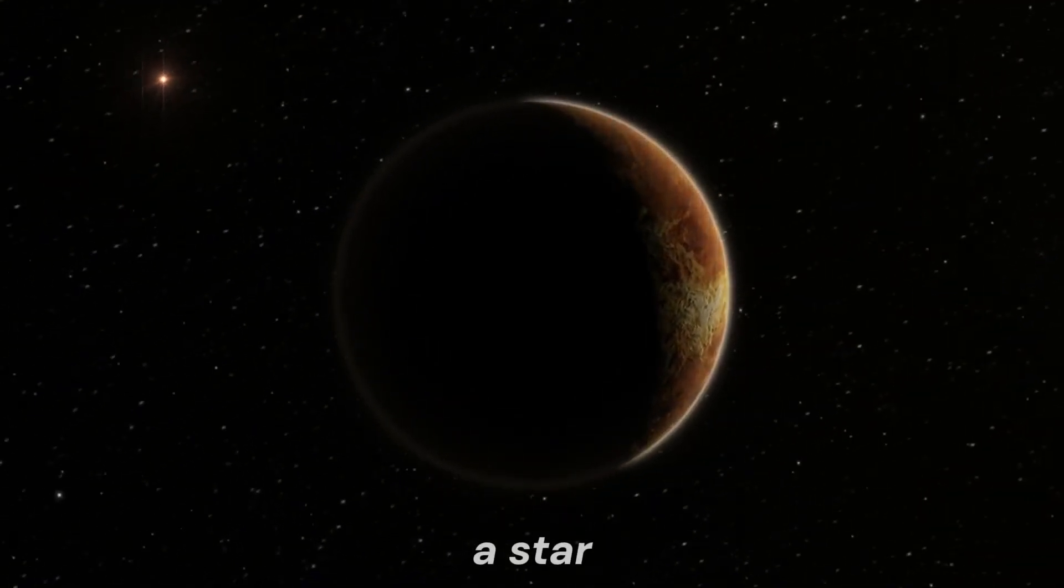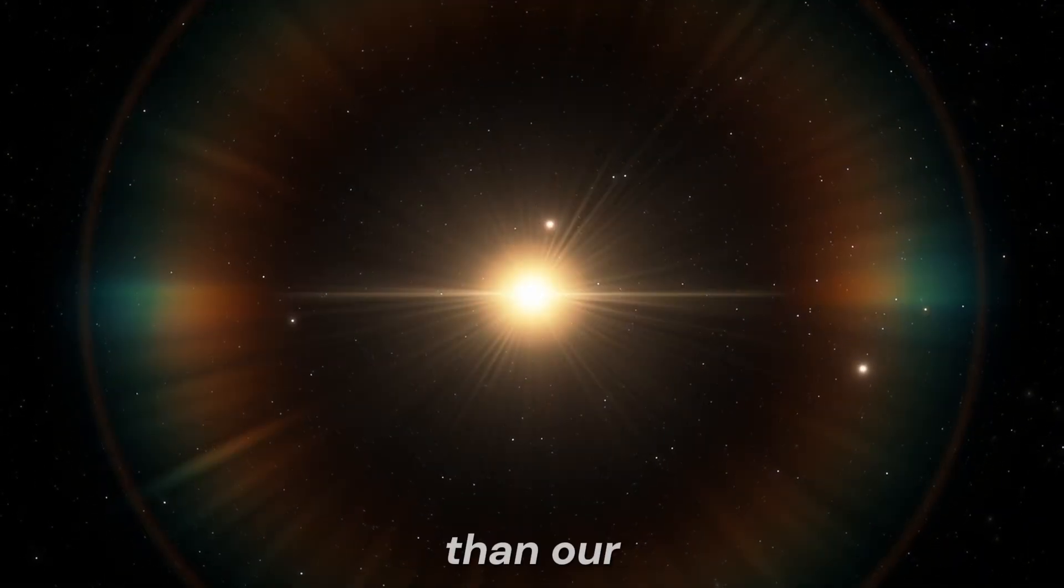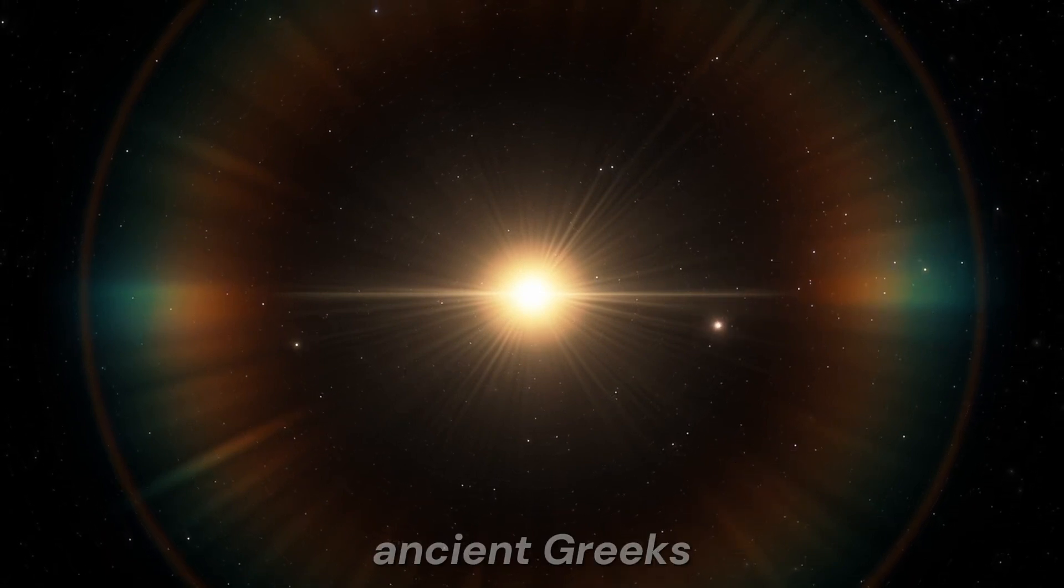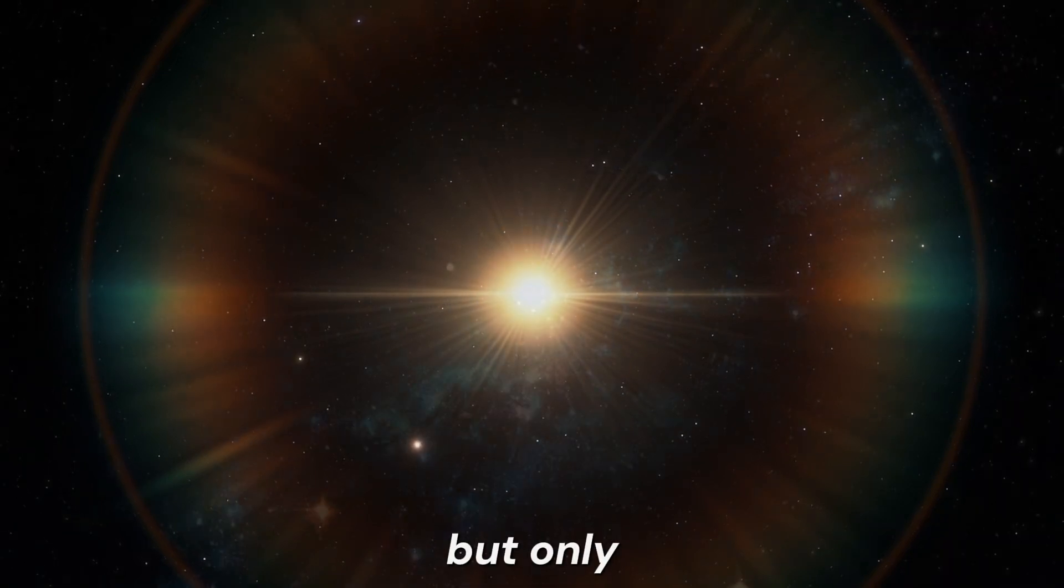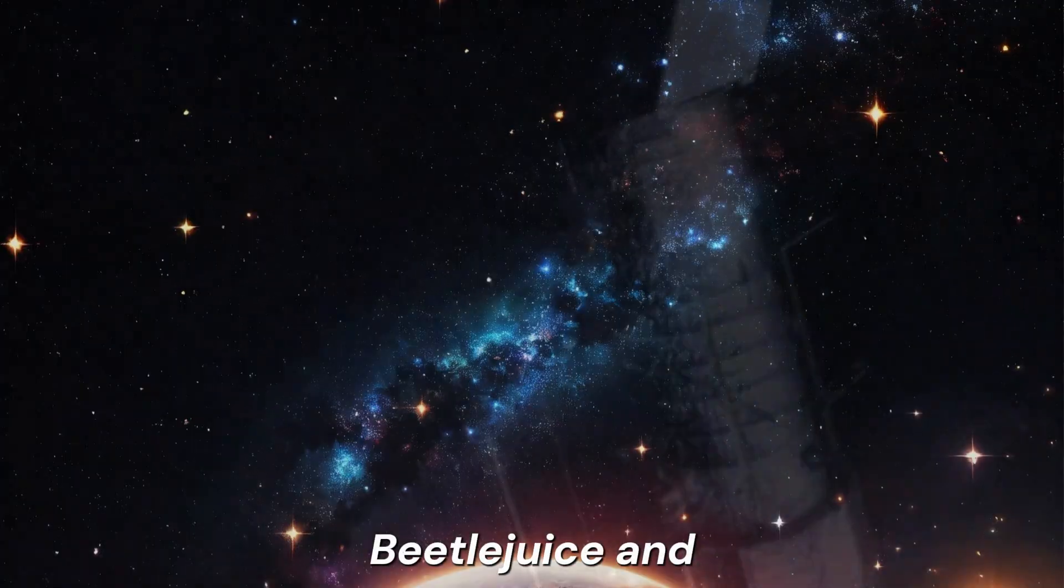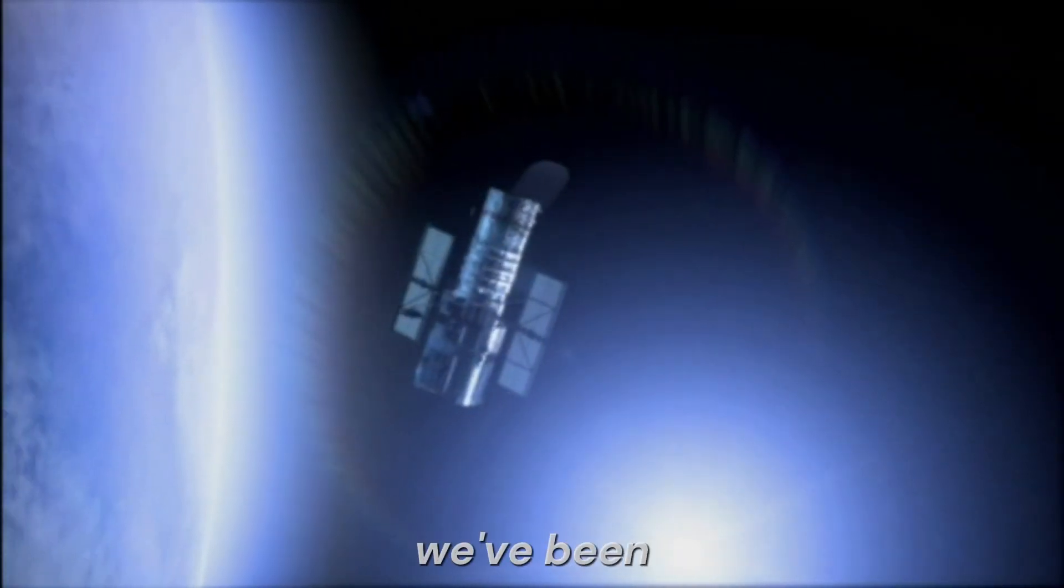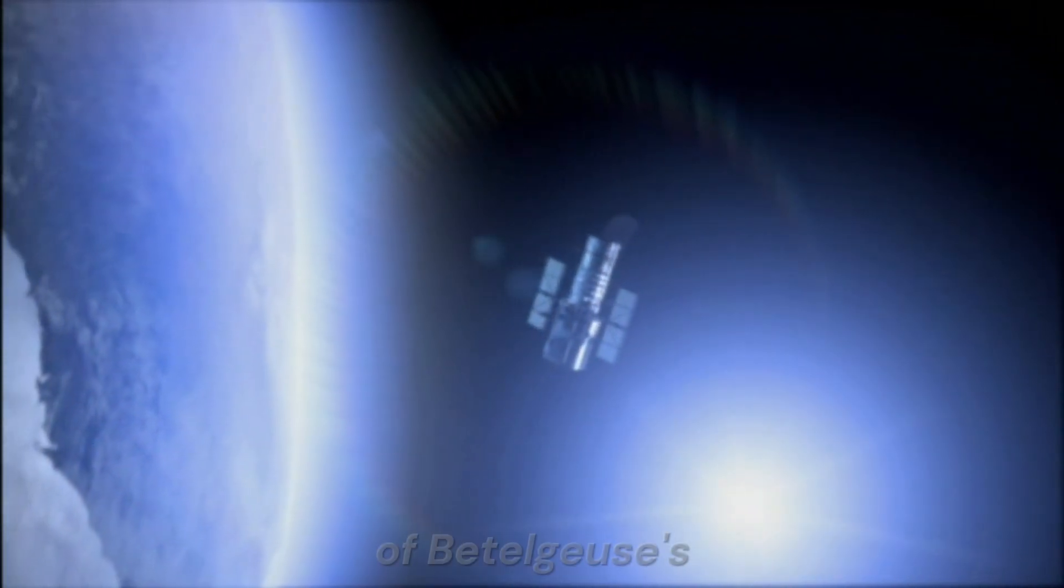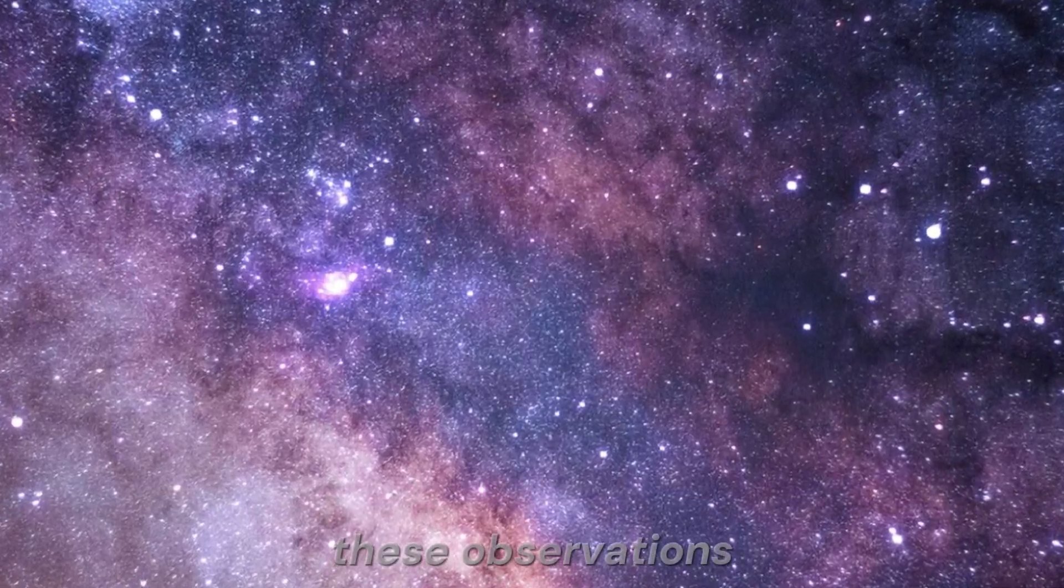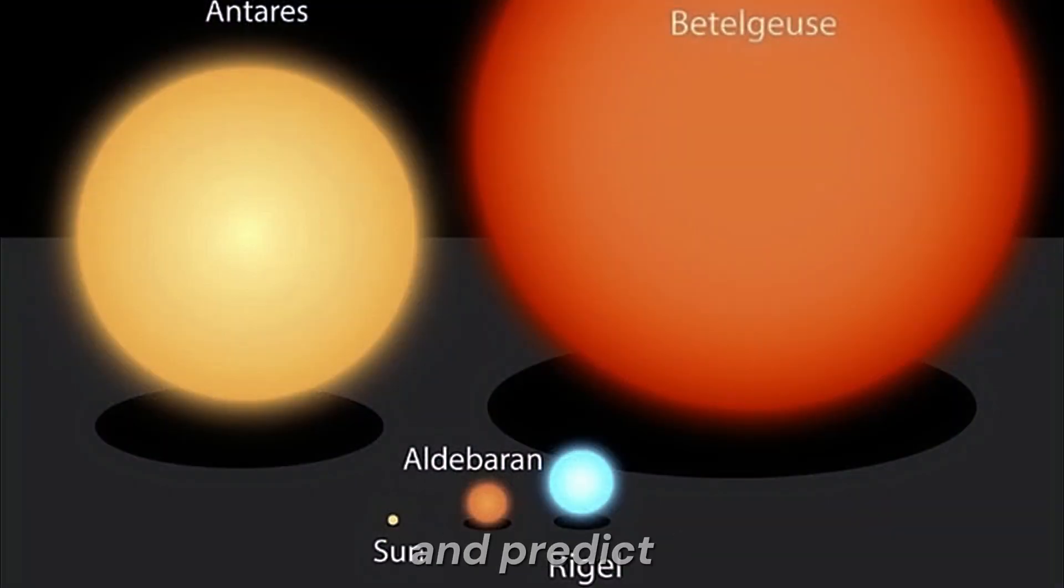Betelgeuse is not only a star with immense dimensions, but also with tremendous mass. It's 20 times heavier than our sun, making it the subject of numerous studies over the centuries. Ancient Greeks already took notice of this star, but only with the development of modern telescopes have scientists been able to more thoroughly study Betelgeuse and its behavior. Thanks to the Hubble Space Telescope, we've been able to obtain detailed images of Betelgeuse's surface, revealing intricate patterns of gas and dust. These observations have allowed scientists to create models to understand the star's behavior and predict its future development.